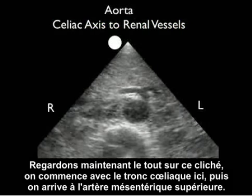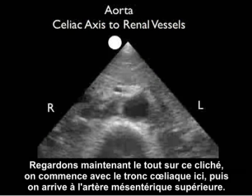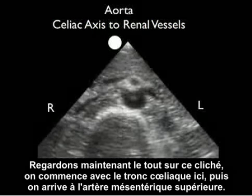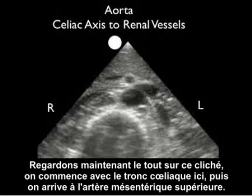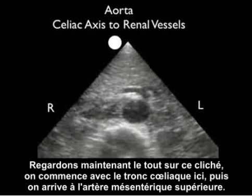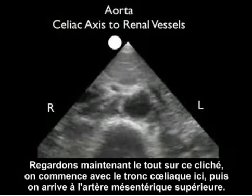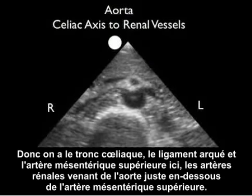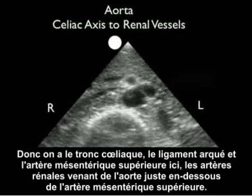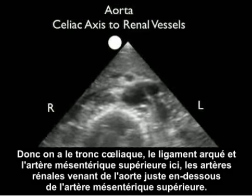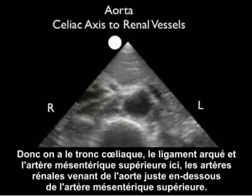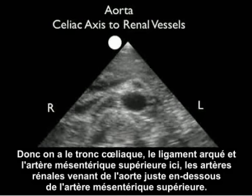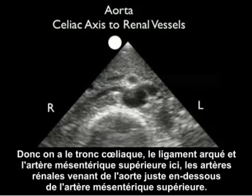Now let's look at a video clip that puts it all together, beginning with the celiac axis and moving on to the superior mesenteric artery. We see the celiac seagull sign, then the superior mesenteric artery, and we can actually see the renal arteries coming off the aorta just below the superior mesenteric artery.